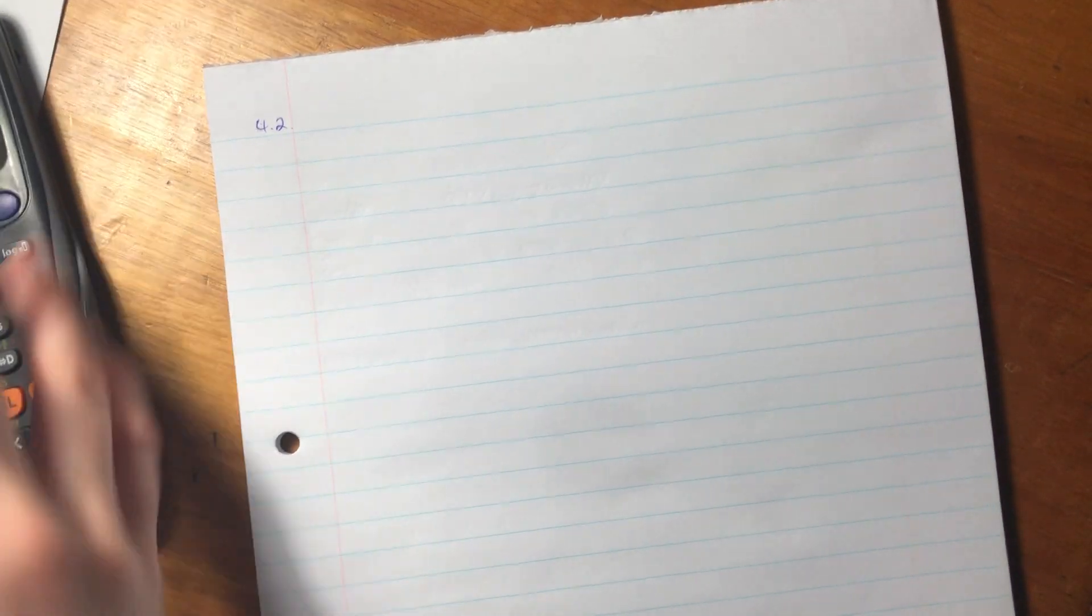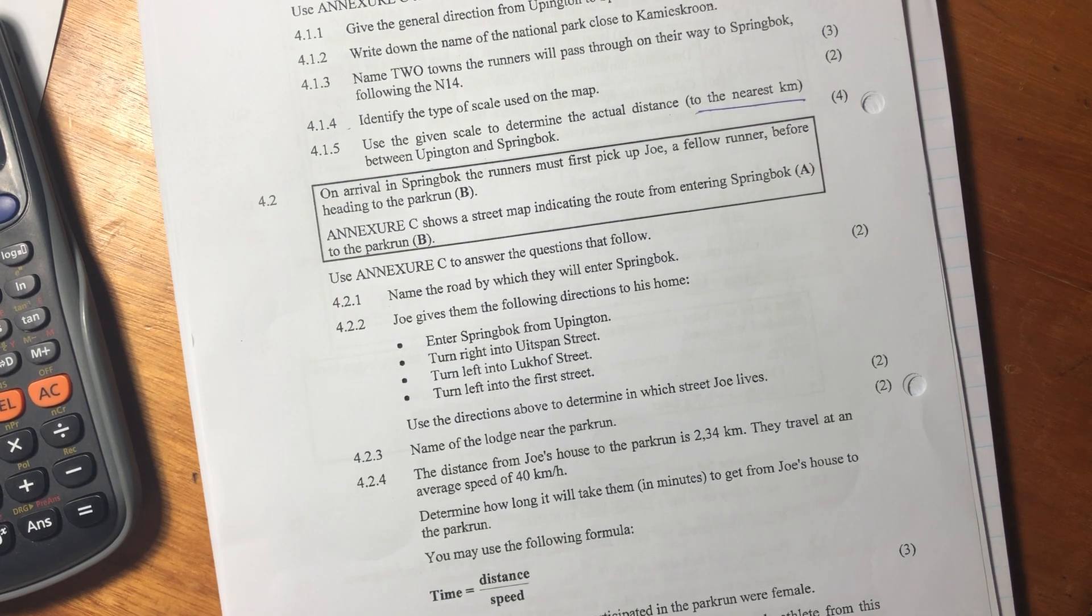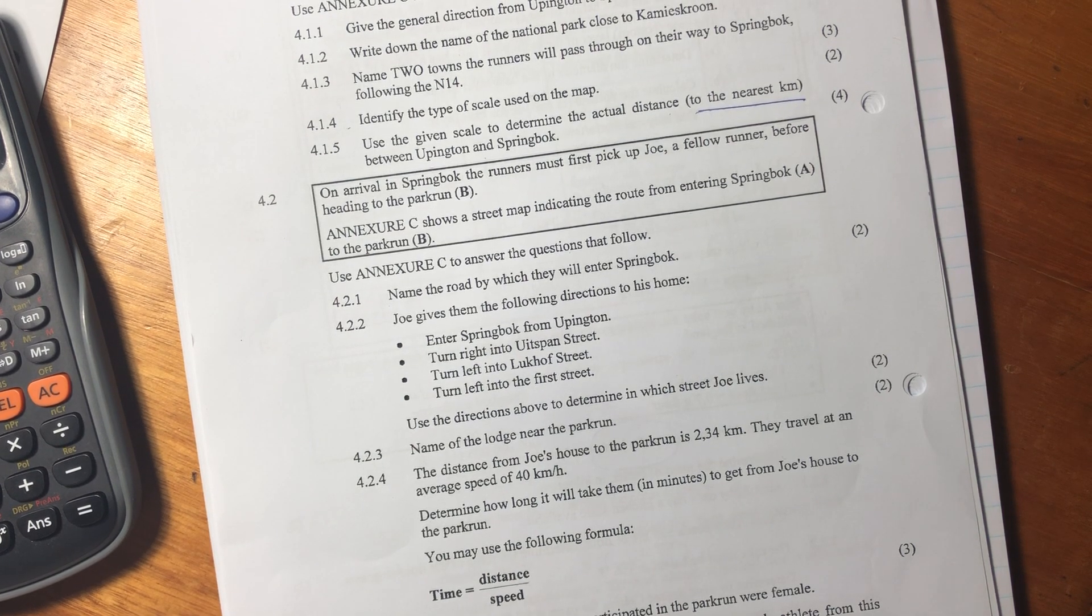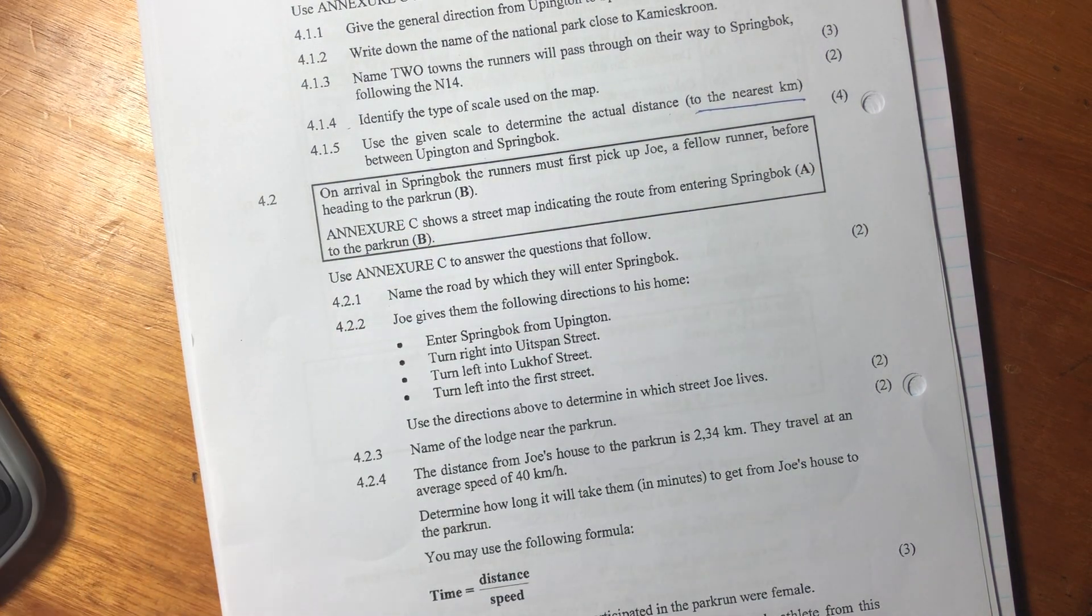Okay, 4.2. So it says, on arrival in Springbok, the runners must first pick up Joe, a fellow runner, before heading to the parkrun. And they've given us this label B, but let's just see what's going on. It says, annexure C shows a street map indicating the route from entering Springbok A to the parkrun B.